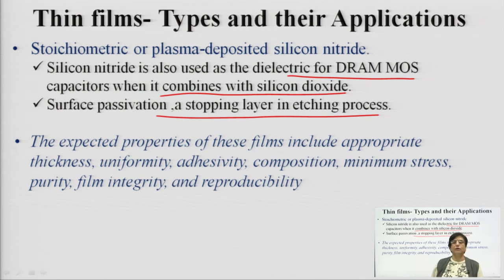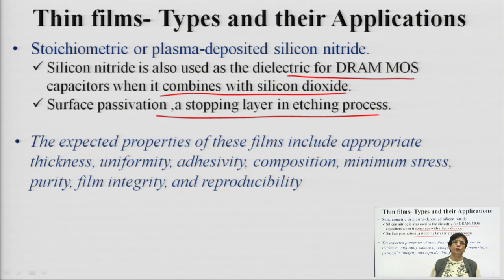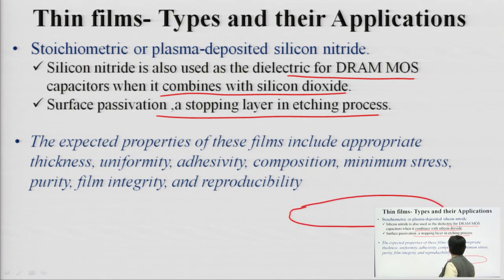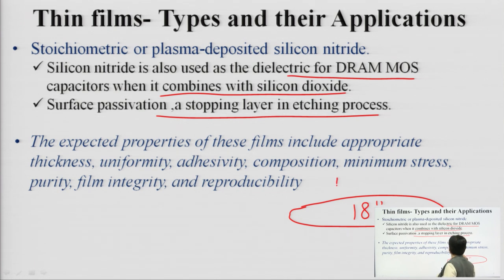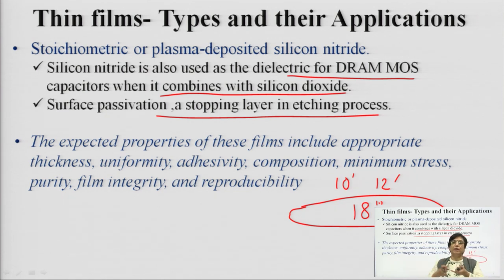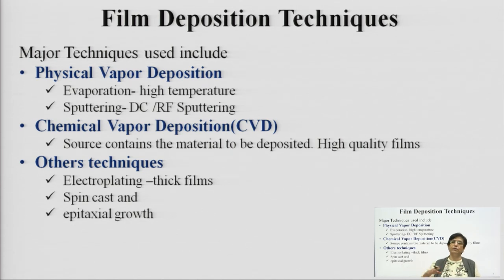The expected properties of these films include good reproducibility, appropriate thickness — whether thin or thick — uniformity, adhesivity, good composition, integrity, minimum stresses, reliability, and purity. When using large-diameter wafers, such as 18-inch wafers on which many devices are fabricated, every single device must have the same deposited film with the same properties. Previously wafers were 10 or 12 inches; now the industry is moving to 18-inch wafers.